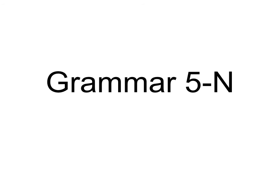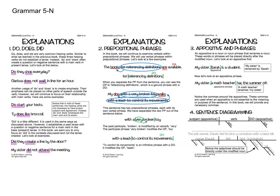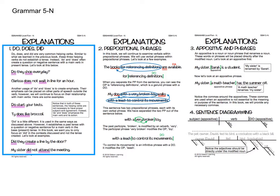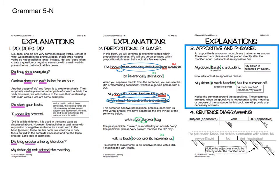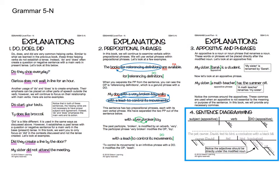Welcome to Grammar 5N. In this booklet we will have three explanation pages. We will cover do, does, did, verbals and prepositional phrases, and we're going to learn about appositives and appositive phrases, and then we'll diagram with those appositives and appositive phrases.